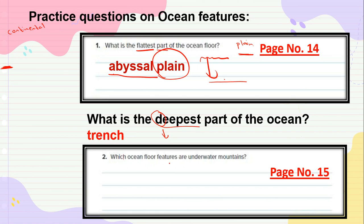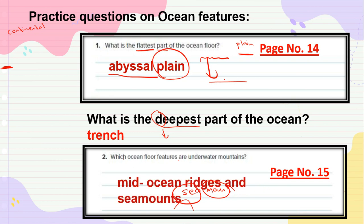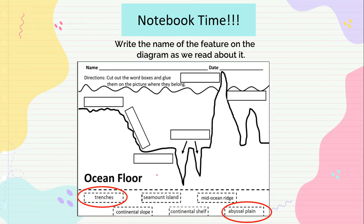Underwater mountains are called seamounts — like sea mountain. Another underwater mountain feature is called the mid-ocean ridge. These look a little higher and you'll see a V-shape in between. You can see some trenches, and this area forms like a mountain — that would be your mid-ocean ridge.